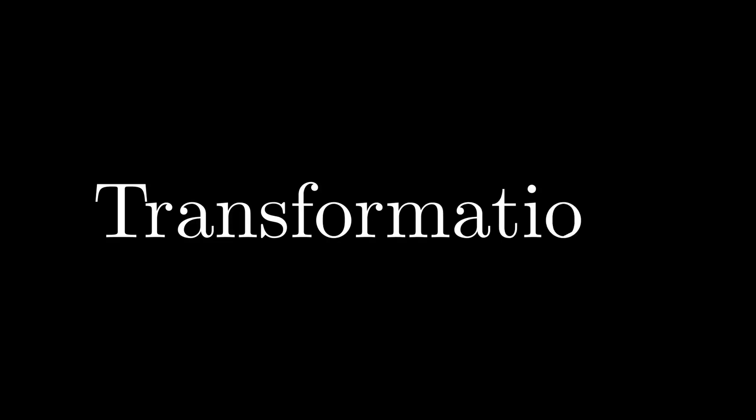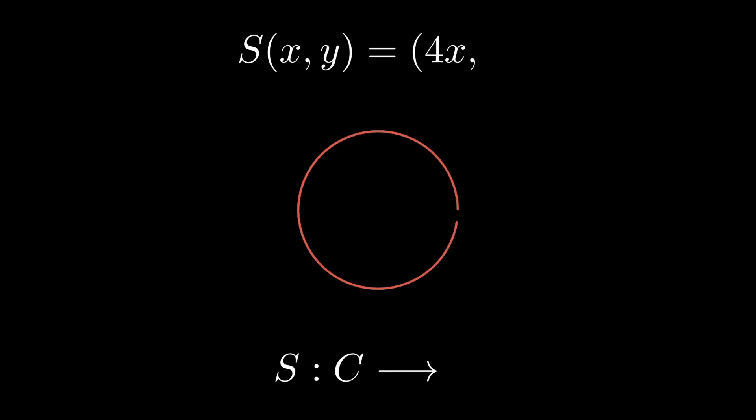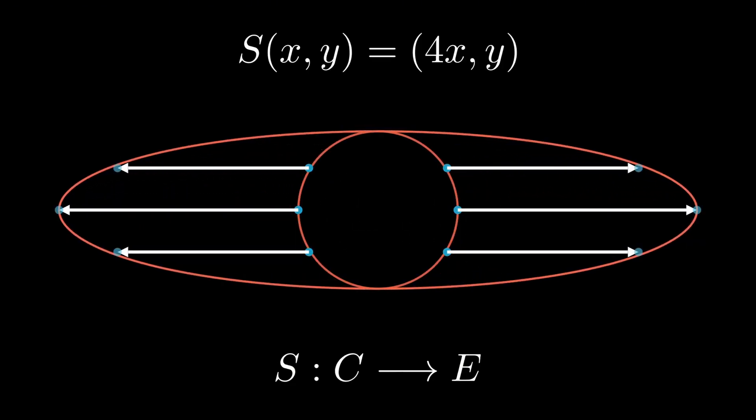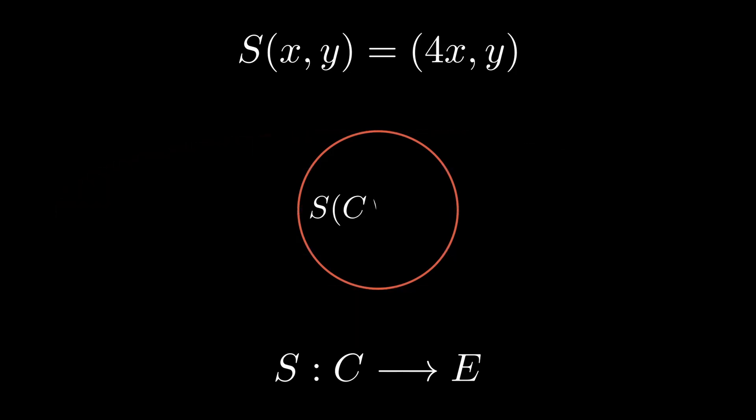What do we mean by a transformation? We simply mean a map or a function like f. A function maps points to points, as seen here in stretching the circle into an ellipse. You might notice there are two parts to a transformation. One is the final result, which would be the image of the original space, otherwise known as the domain.